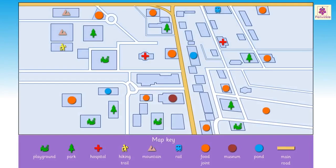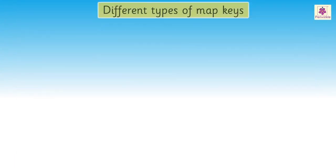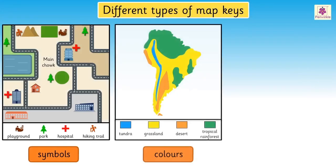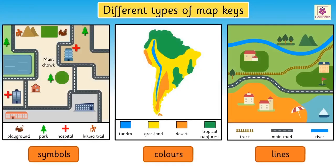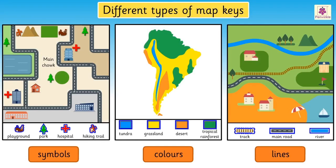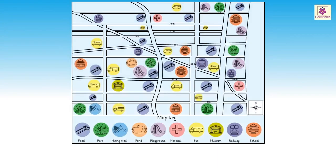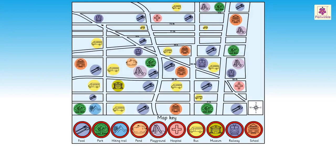We can represent important places on the map using different symbols, colors, or lines, and what they represent is stated in a map key. Now, look at this map and its key. Using the map key, let us try to answer a few questions.